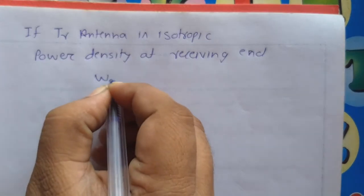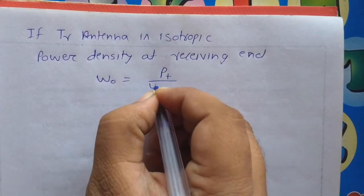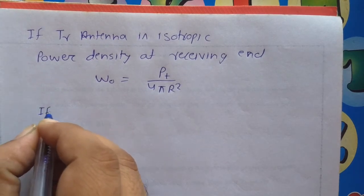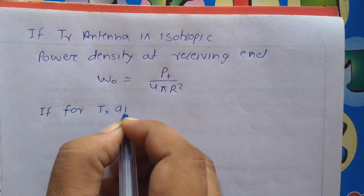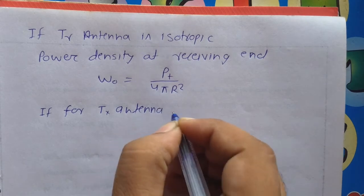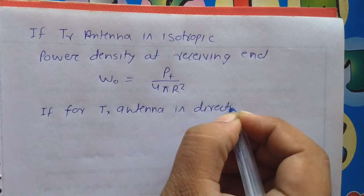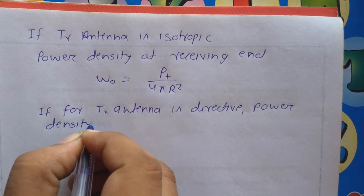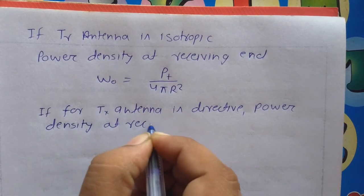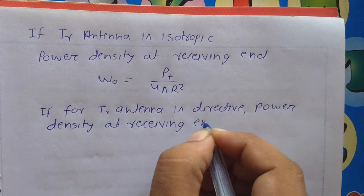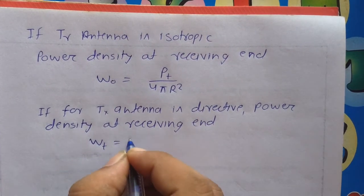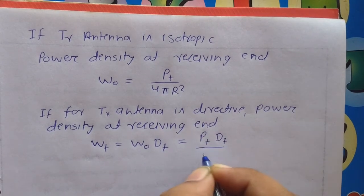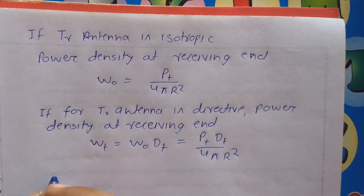Now if the transmitting antenna is isotropic, then the power density at the receiving end will be W₀ equal to PT divided by 4πR². If for the transmitting antenna Wt is the power density and DT is the directivity of the transmitting antenna, then the power density at the receiving end is Wt equal to W₀ into DT, which gives PT×DT divided by 4πR². The power received by the antenna is then derived from this.